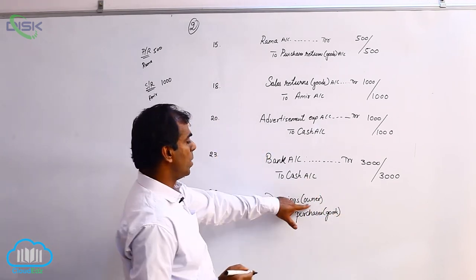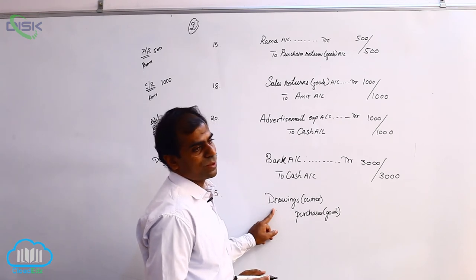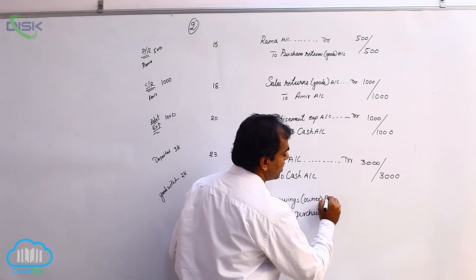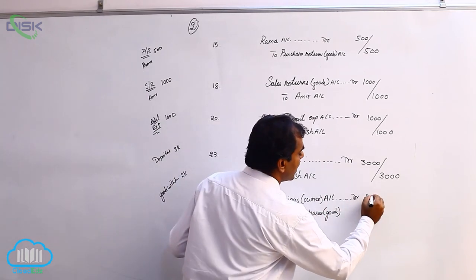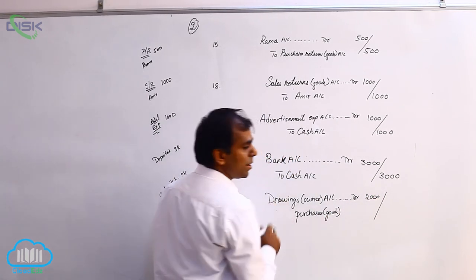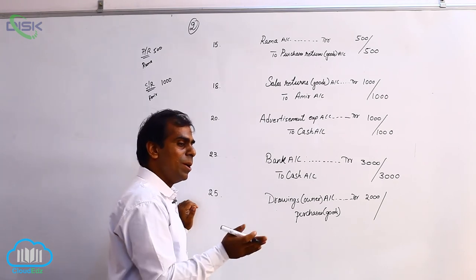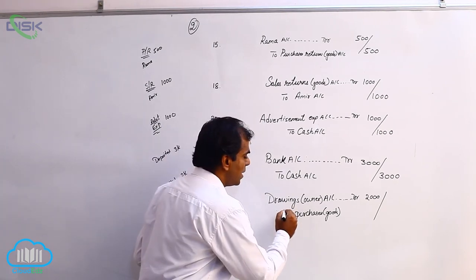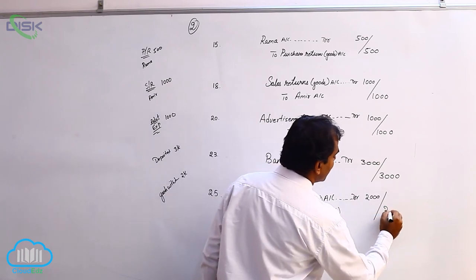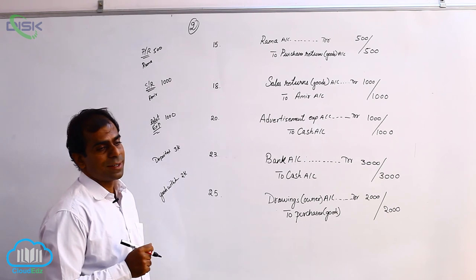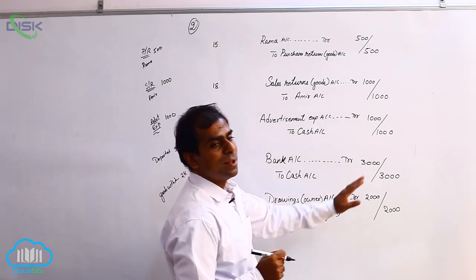Drawings is a personal account and the owner is the receiver of the goods, so we debit the drawings account based on the personal account rule — debit the receiver. Drawings account debit 2000. Goods are a real account, represented by the word purchases, and goods are going out from the business to the owner's place. Apply the rule: credit what goes out. Entry: drawings account debit to purchases account. Narration: being goods withdrawn by owner for personal use.